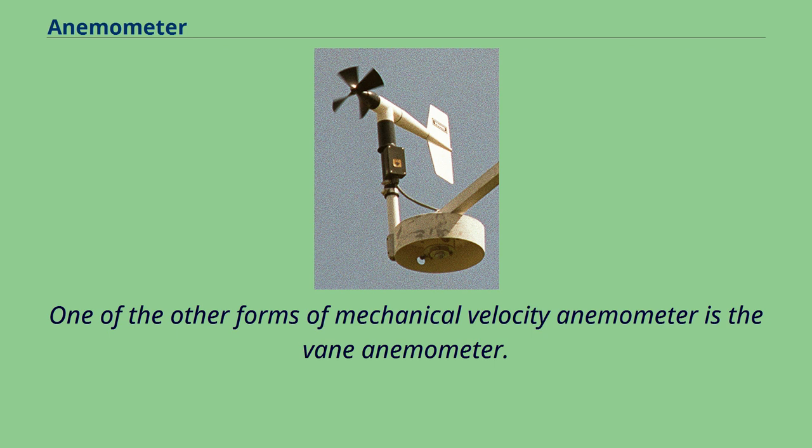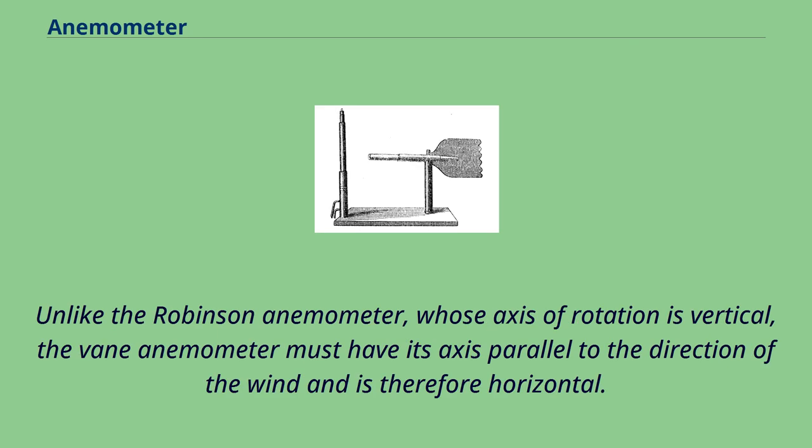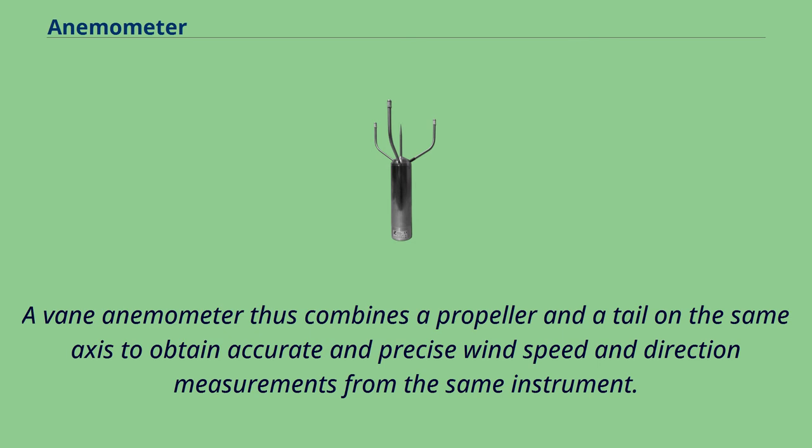One of the other forms of mechanical velocity anemometer is the vane anemometer. It may be described as a windmill or a propeller anemometer. Unlike the Robinson anemometer, whose axis of rotation is vertical, the vane anemometer must have its axis parallel to the direction of the wind and is therefore horizontal. Furthermore, since the wind varies in direction and the axis has to follow its changes, a wind vane or some other contrivance to fulfill the same purpose must be employed. A vane anemometer thus combines a propeller and a tail on the same axis to obtain accurate and precise wind speed and direction measurements from the same instrument.